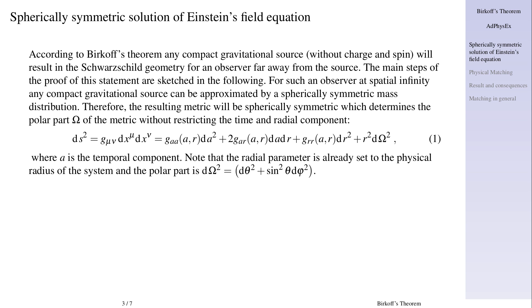ds squared equals g mu nu dx mu dx nu equals g a a d a squared plus 2 g a r d a d r plus g r r d r squared plus r squared d omega squared.